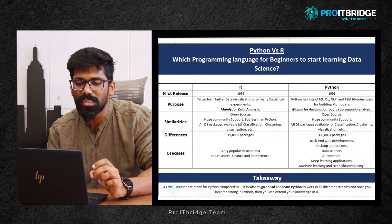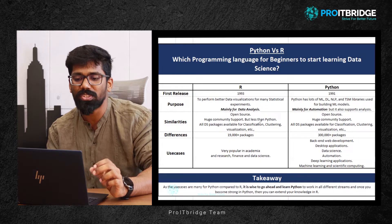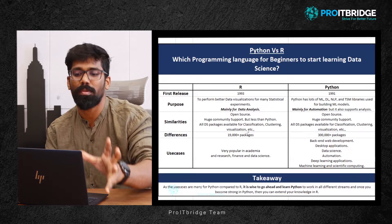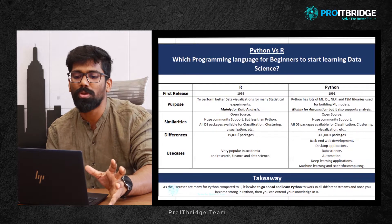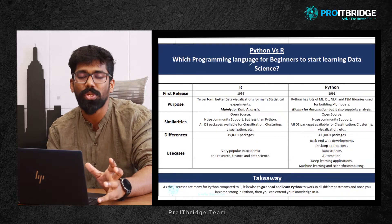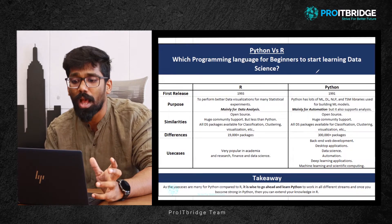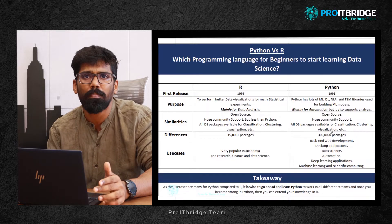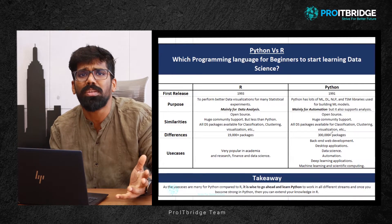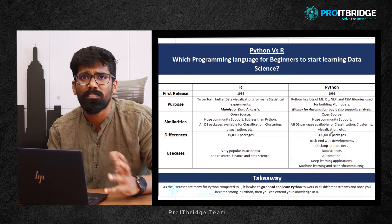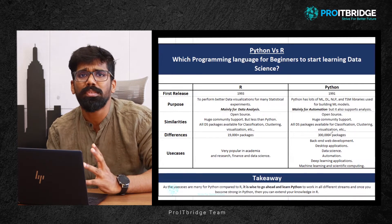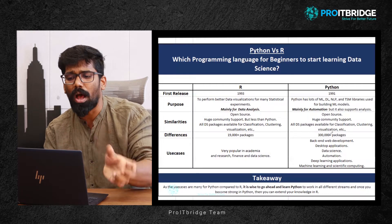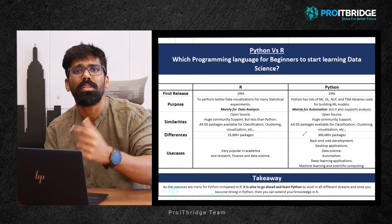All data science packages are available in R for classification, clustering, and visualization. When you look at Python, the same things are available there too. So what is the difference, if every package related to automation and analysis is available in both R and Python?